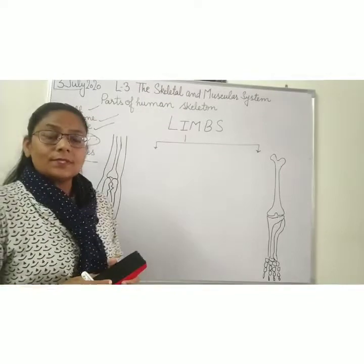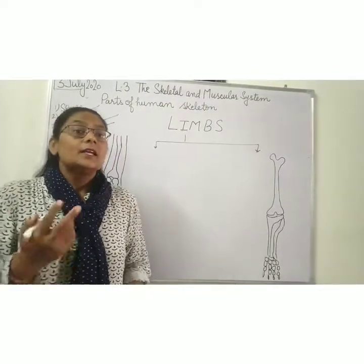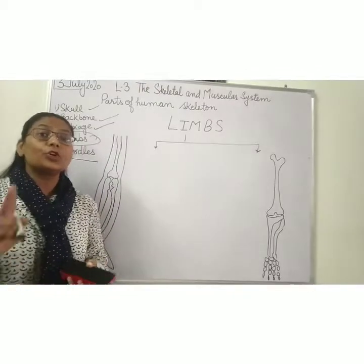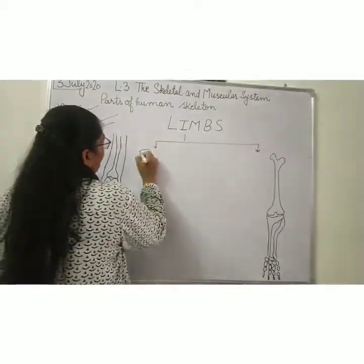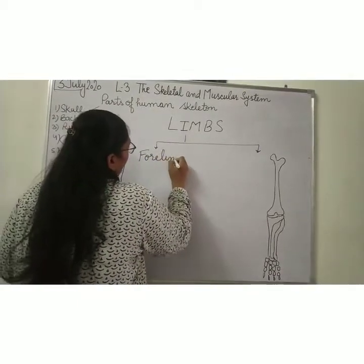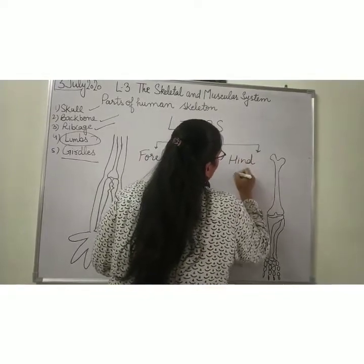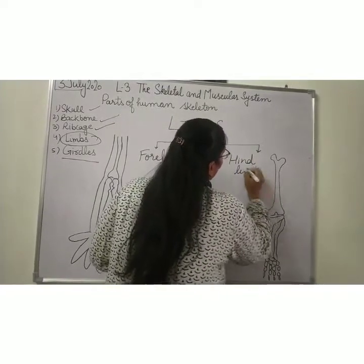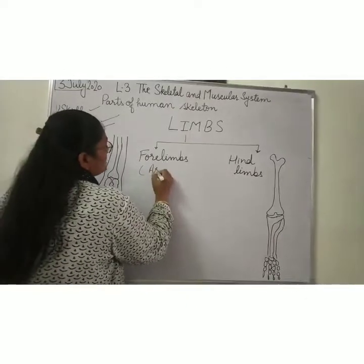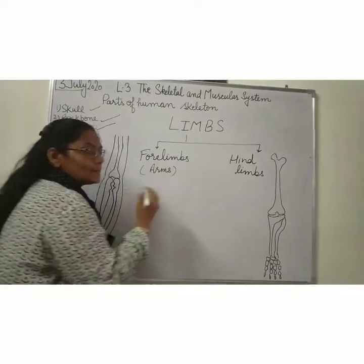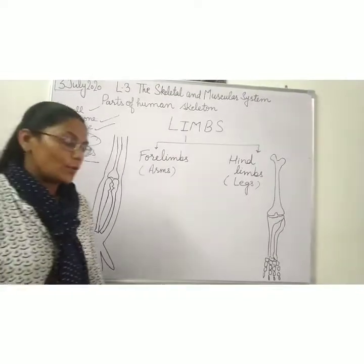Now, what are limbs? Limbs are our hands and legs. Limbs are divided into two parts: fore limbs and hind limbs. Fore limbs means our arms, and our legs come in the category of hind limbs.